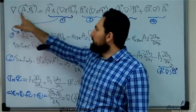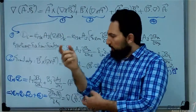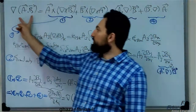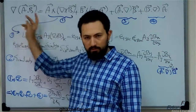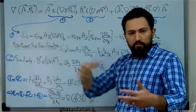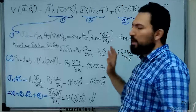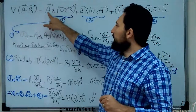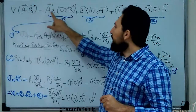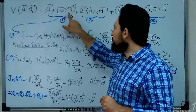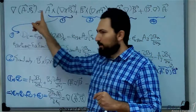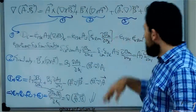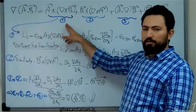This is the gradient of the dot product of two vectors. The dot product of two vectors is a scalar, and the gradient of a scalar is a vector. So this term is a vector quantity. Because of the homogeneity of all terms, the other terms have to be a vector quantity. This is the cross product of a vector and the curl of another vector, which is a vector — so the product of this expression is again a vector. Term number two and term number one are similar.